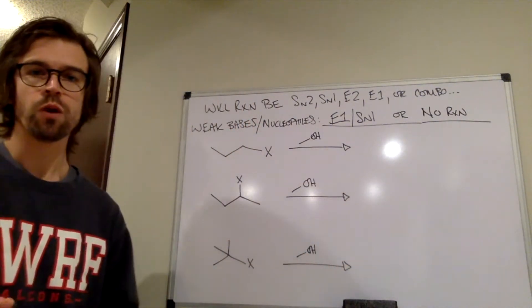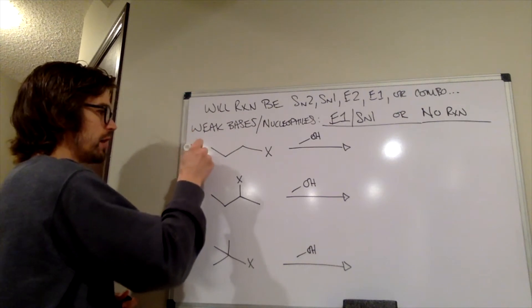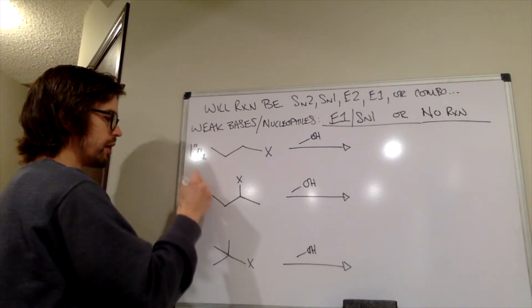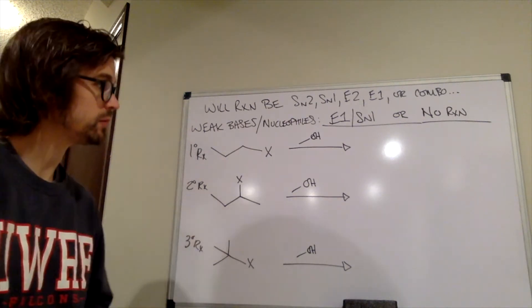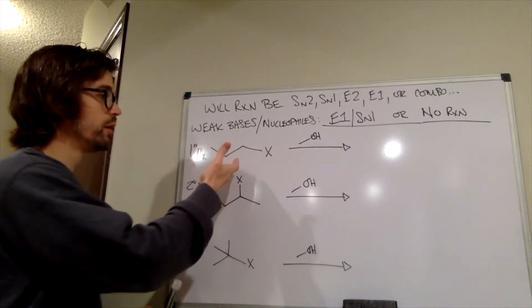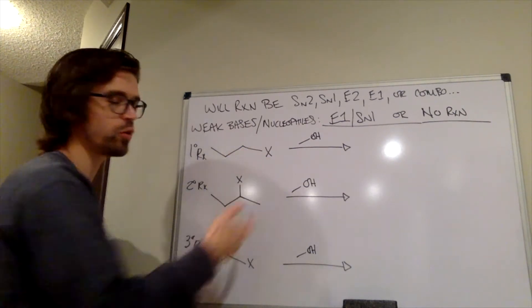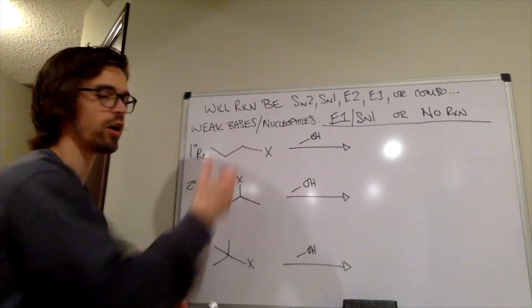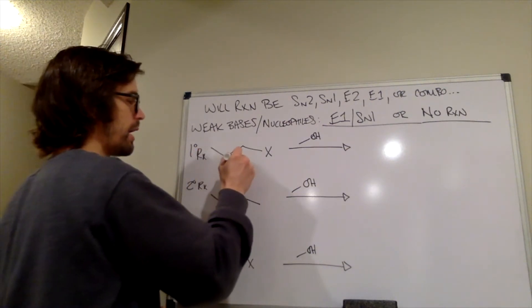So when would they do no reaction? Well, let's look at our different cases here. We have a primary alkyl halide here, a secondary alkyl halide here, and a tertiary halide here, alkyl halide here. This first one, if this halide left, if the electrons move toward that X and left that carbon, that would be a primary carbocation. We can't form primary carbocations.